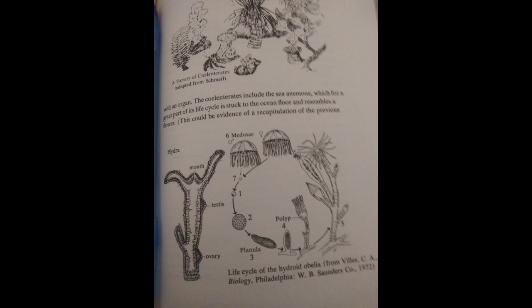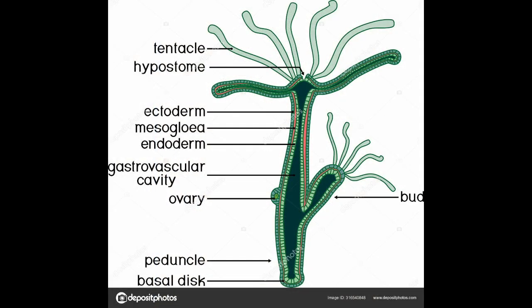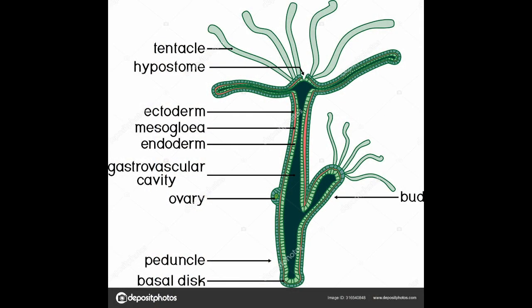A hydra has a mouth, and the entire interior is basically a stomach. It's called a hydra because it has these tentacles at the top, like the character in Greek myth that Hercules had to fight. That's an example of one of the creatures from that level.